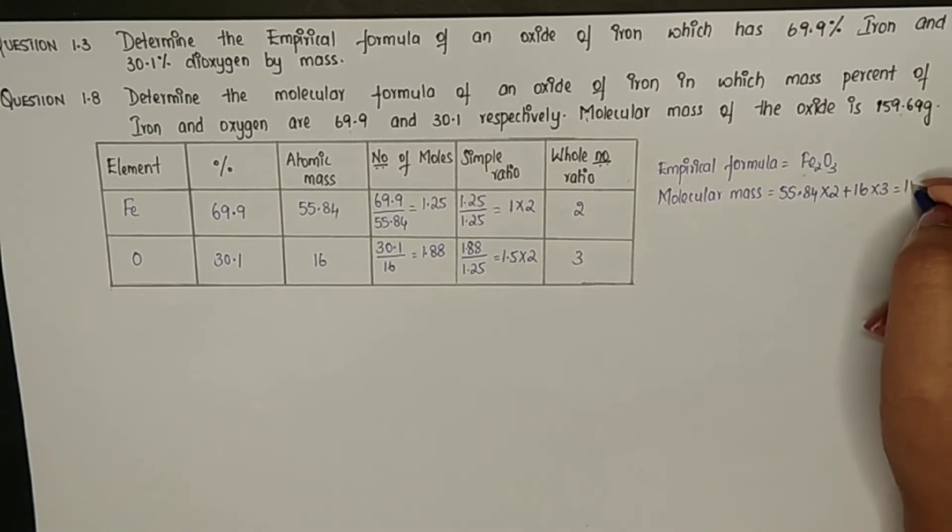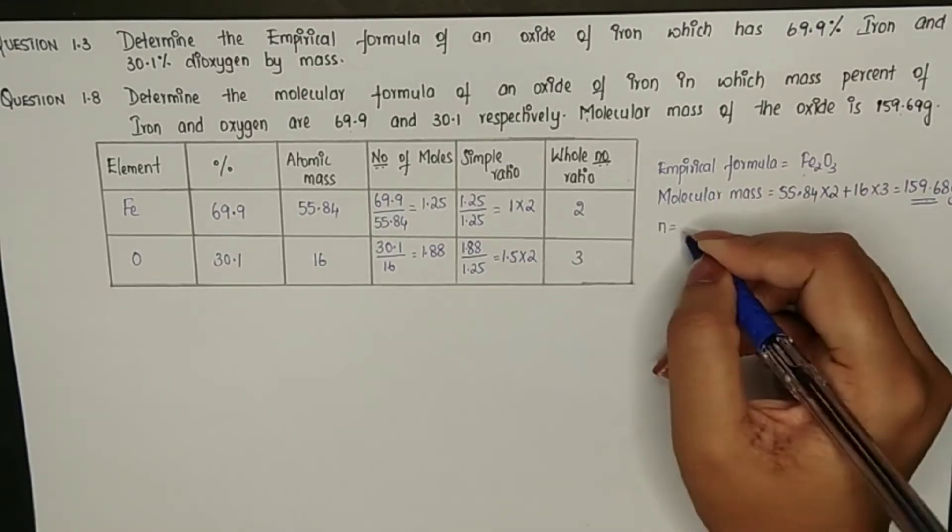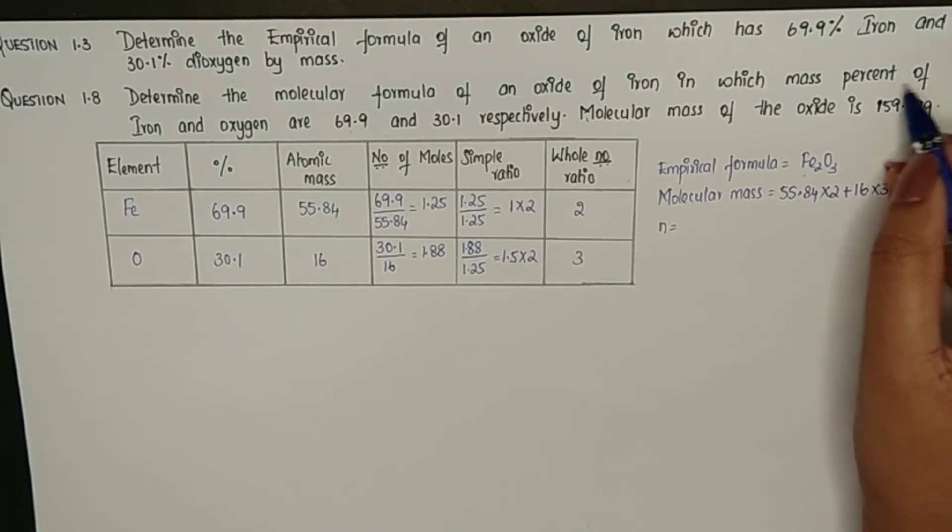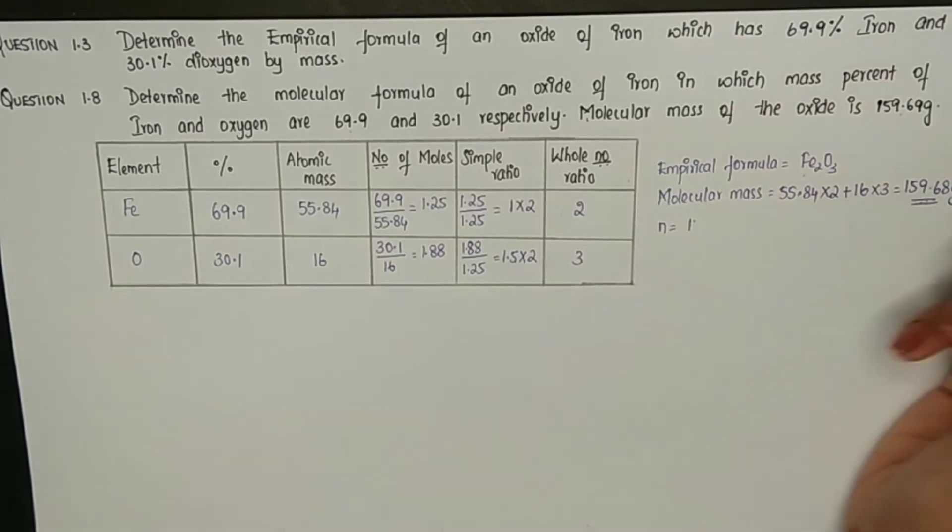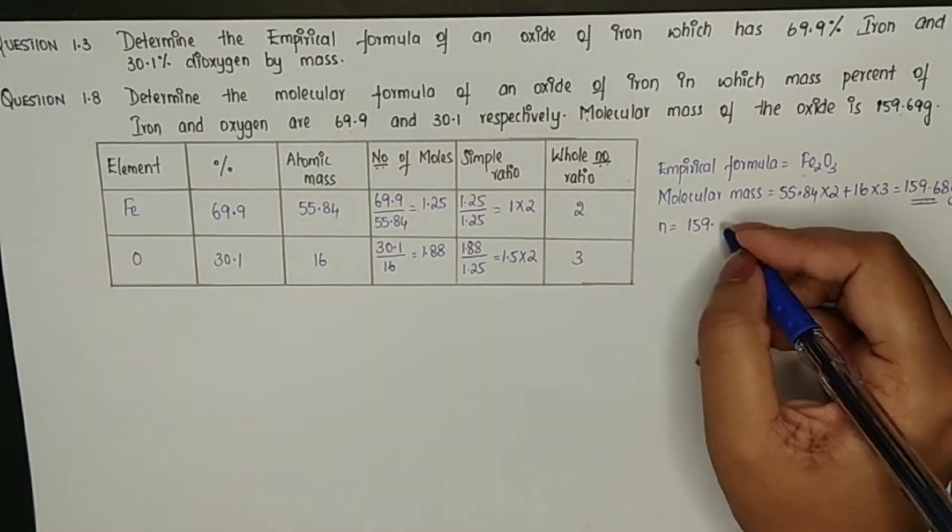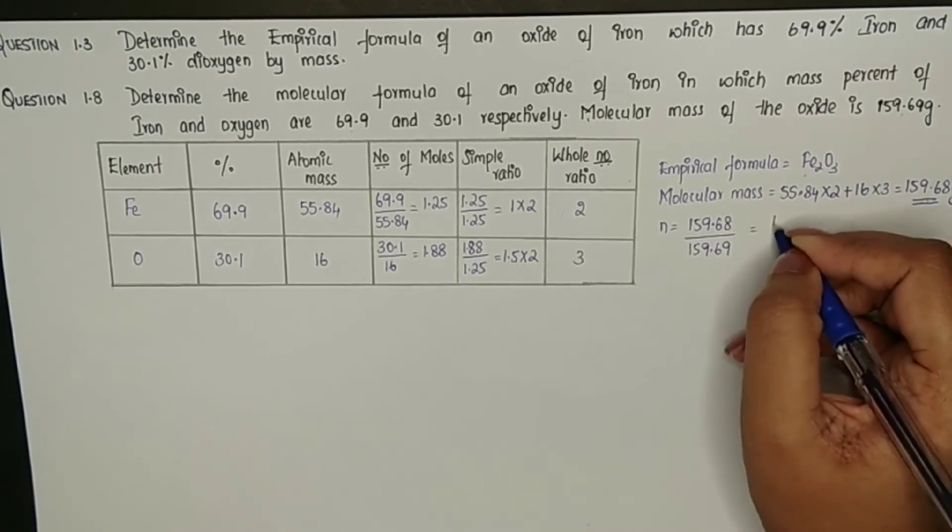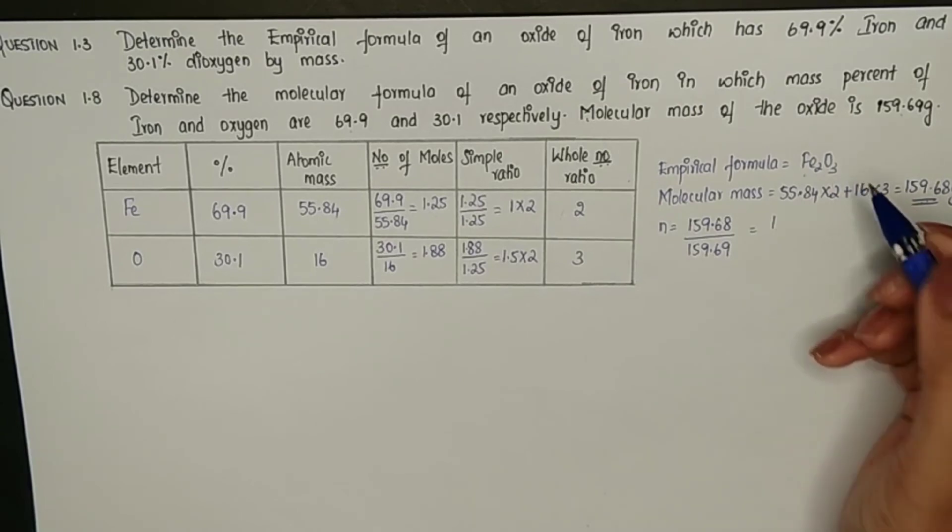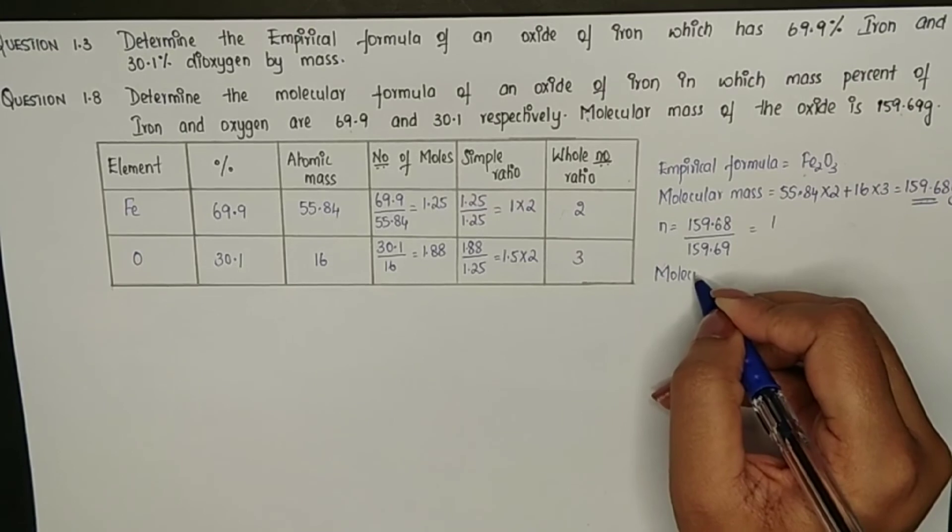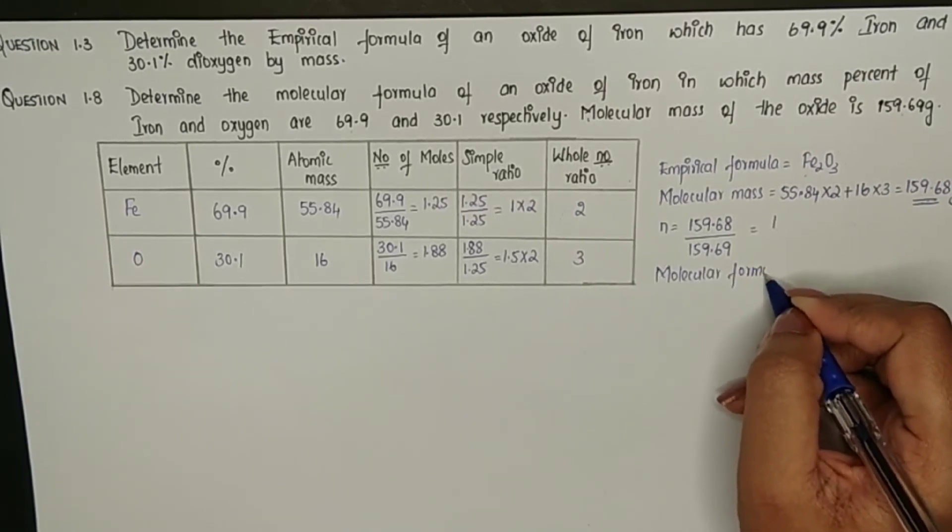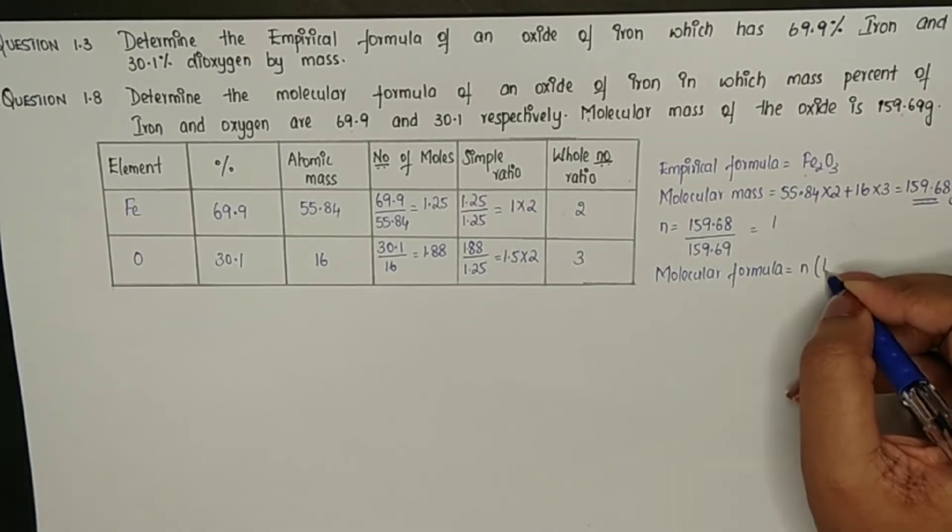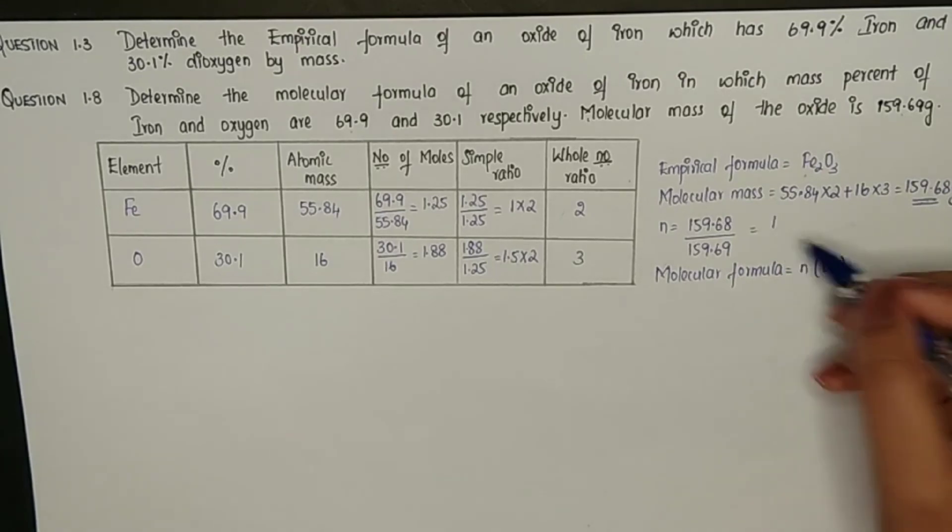Now we need to find n value. n is the mass from the molecular formula divided by the mass of the empirical formula. Here both values are the same. The molecular mass of the empirical formula and the molecular mass given to us are the same. This n value should be multiplied with the empirical formula. So the molecular formula is n value times the empirical formula. The n value is 1, and the empirical formula is Fe2O3. Therefore our molecular formula is also the same in this case.